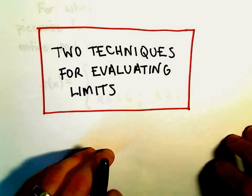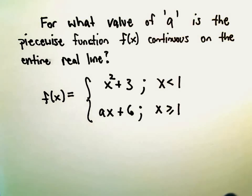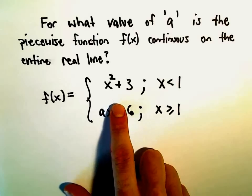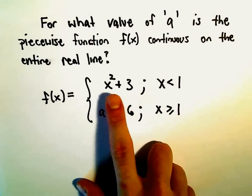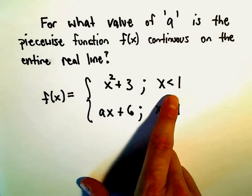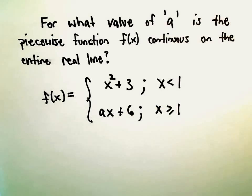Alright, so one more problem here related to limits, and this is actually gonna have a little bit to do with continuity. So we want to figure out what value of a is this piecewise function continuous on the entire real line. So we've got the piecewise function x squared plus 3 if x is less than 1, and then we have ax plus 6 if x is greater than or equal to 1.